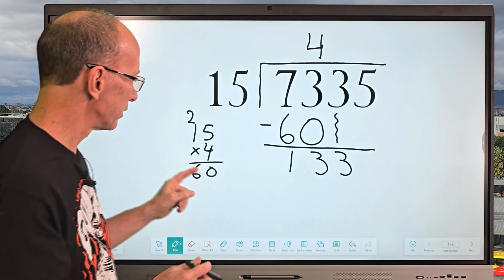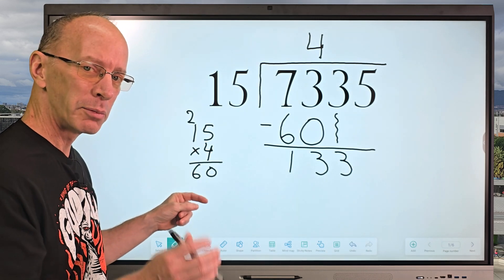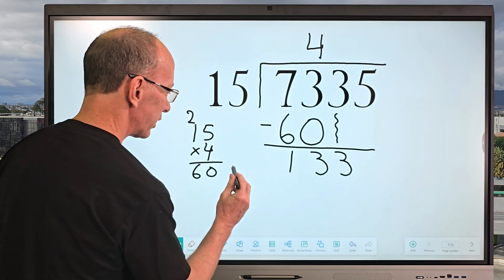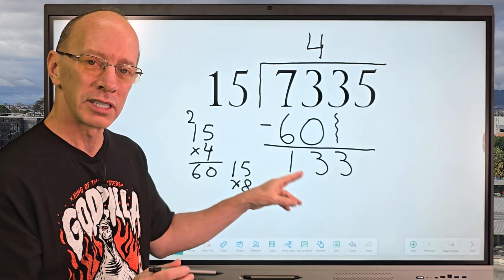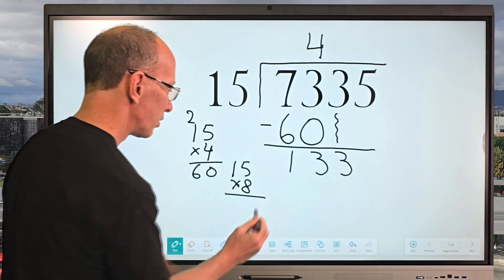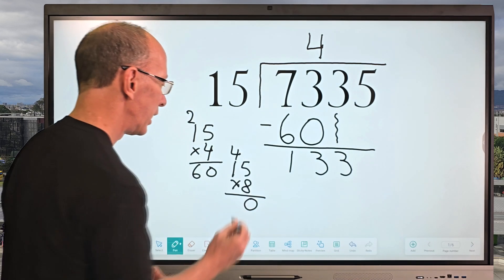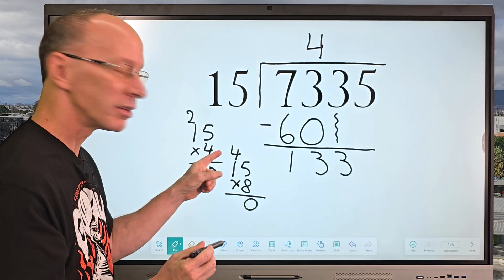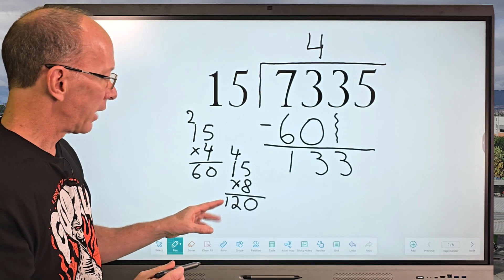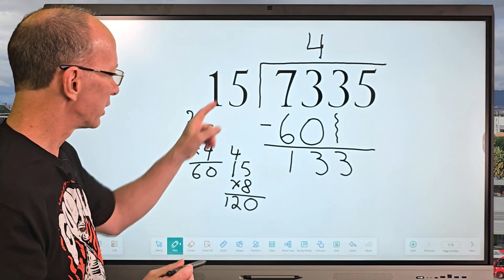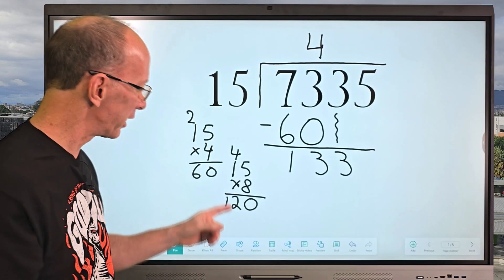So we're going to take, now look at this. 15 times 4 is 60. So if I double 60, that would be 120. So let's take a look at this. Let's say 15 times 8 because I'm doubling. I'm trying to come as close as I can right over here to 133. So let's take 5 times 8 would be 40. So I put the 0 here, put the 4 up there. And now I take 8 times 1 is 8 plus the 4 right there. So that'd be 8, 9, 10, 11, 12. So I put 12 right here. I think that's about as big as I can go because if I put 15 plus 120, that's going to be 135. Too big. So we're going to keep it at 8.